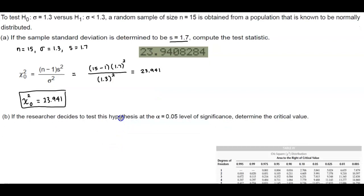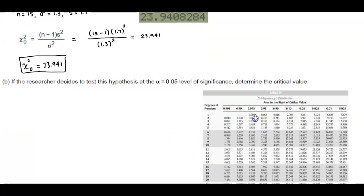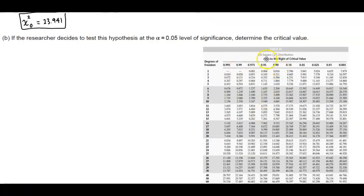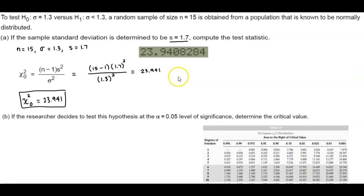Next, if the researcher decides to test this hypothesis at the alpha equals 0.05 level of significance, determine the critical value. We have our critical chi-squared distribution. We're given a sample size of n equal to 15, so in order to find the degrees of freedom, we subtract 1 from the sample size. The sample size is 15, so degrees of freedom equals 14.